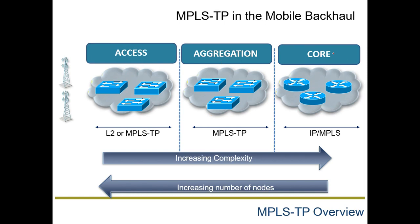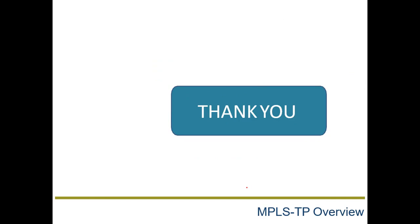MPLSTP is mostly used on the access and aggregation side. For the core side, we have IP MPLS, which is layer 3. As you move from access to aggregation to core, complexity increases, while as you move from core to the access side, the number of nodes increases. Thank you, and we will see you in the next sequential video in the upcoming sessions.